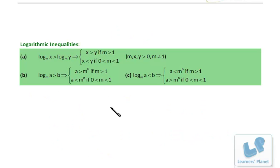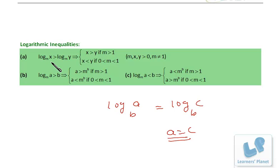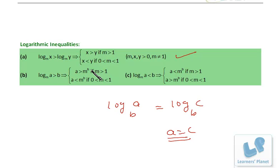Next is logarithm equalities and inequalities. If log A to the base B equals log C to the base B, then A equals C. For inequalities: if log x to the base M is greater than log y to the base M, then x is greater than y if M is greater than 1, and x is less than y if M is between 0 and 1. Also, if log A to the base M is greater than B, then A is greater than M^B if M > 1, and A is less than M^B if M is between 0 and 1.